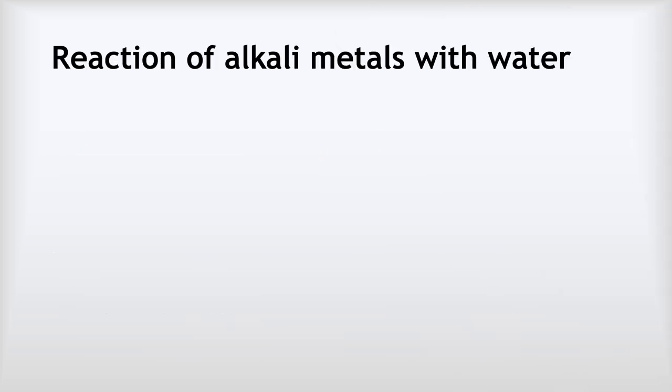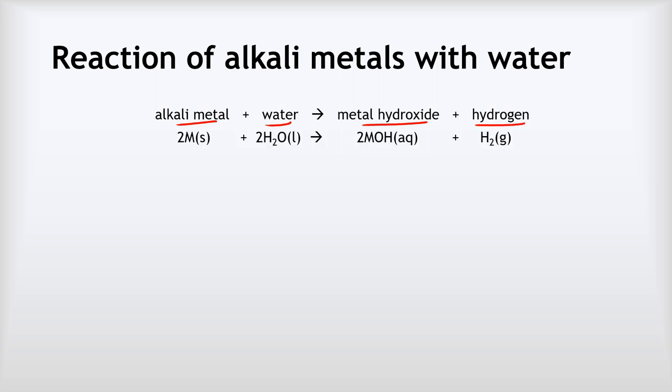OK, so how do the alkali metals react with water? Well, they all do it in the same way. An alkali metal when it reacts with water produces a metal hydroxide and hydrogen gas. And if we look at the simple equation for that, the simple equations all have this same format where we say two of the metal react with two waters to produce two metal hydroxides, MOH, and one hydrogen gas molecule.